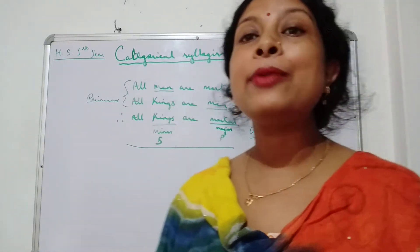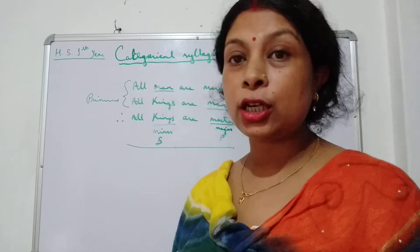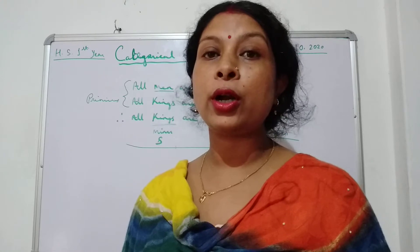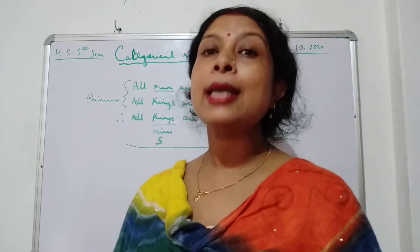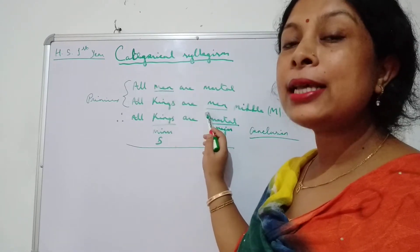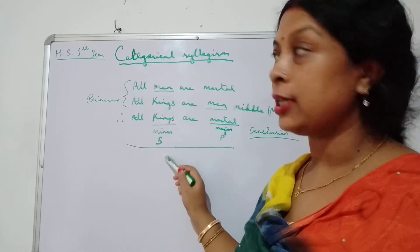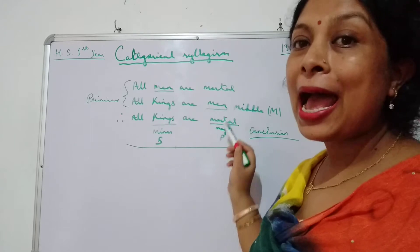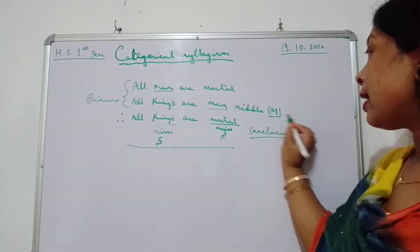The term which is occurring in both the premises but not occurring in the conclusion is known as middle term. The term that occurs in both premises but not in the conclusion is known as middle term. See here — 'man' is present in both the premises but not in the conclusion, so 'man' is known as the middle term, and the symbol for middle term is M.